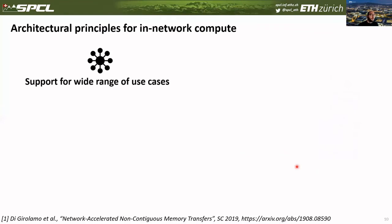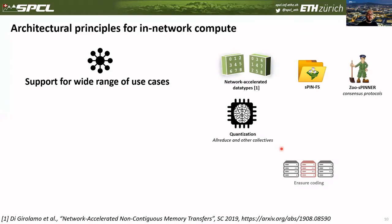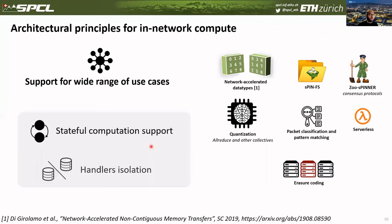The second class of requirements is about supporting a wide range of use cases. SPIN is different from other network compute solutions in that it really allows applications to define their own packet handlers, opening many scenarios ranging from network accelerator data types to consensus protocols, serverless compute, erasure coding, packet classification, and pattern matching. Many of these use cases need some state to persist between the processing of different packets. As a consequence, we need to support stateful computations, plus some form of handler isolation, so that handlers of application A cannot access the memory of handlers of application B.